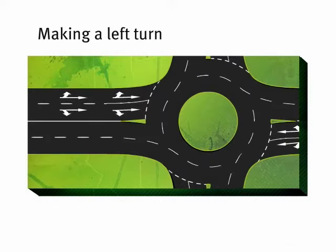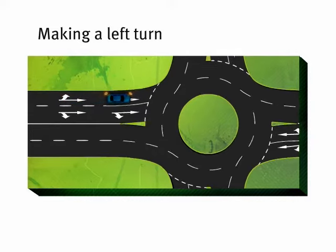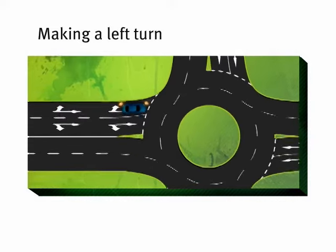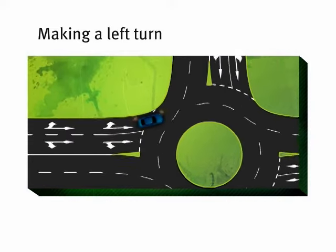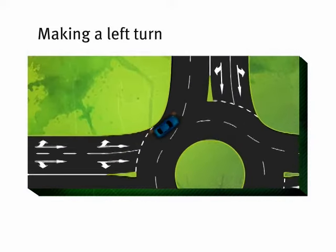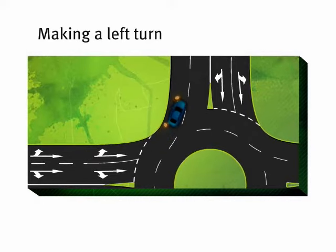If you're planning to turn left, here's the way to do it. Approach the roundabout in the left lane or line of traffic. Then signal left as you approach the roundabout. Continue to signal left as you exit the roundabout, and turn your indicator off after you've exited.